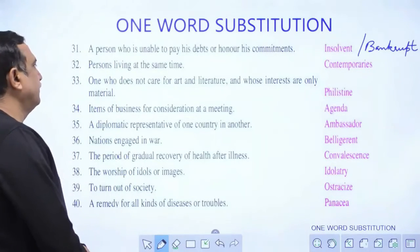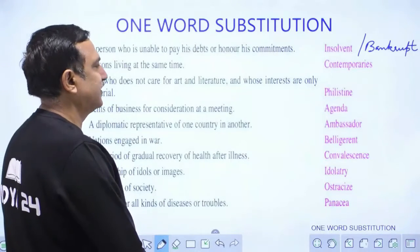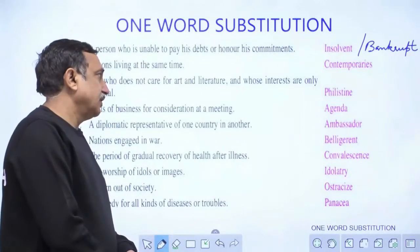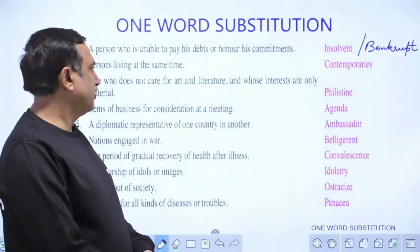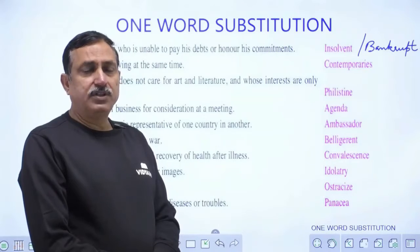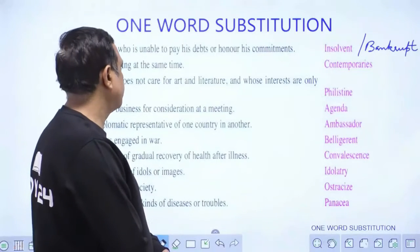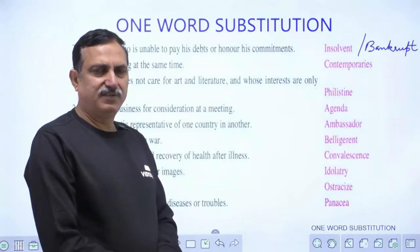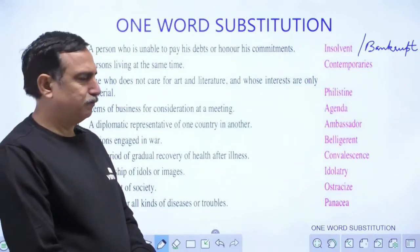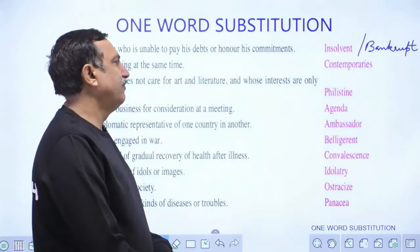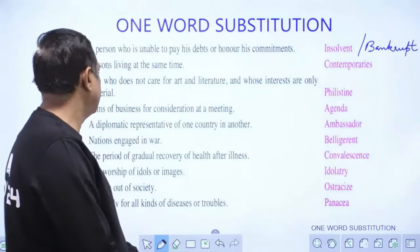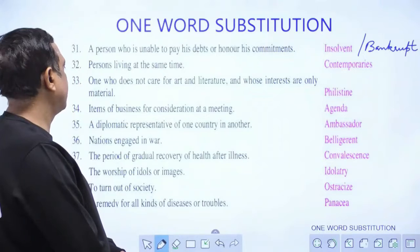One who does not care for art and literature and whose interests are only material is called a philistine. These are people who cannot understand the importance of nature or literature. They live for materialistic gain and are called philistines.